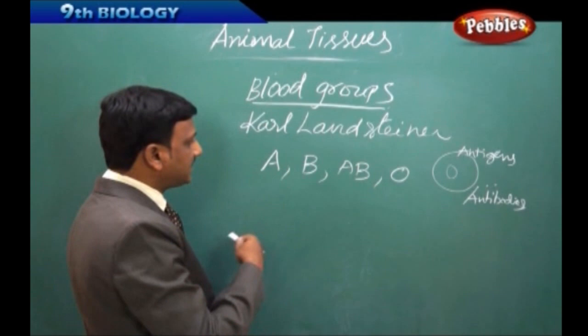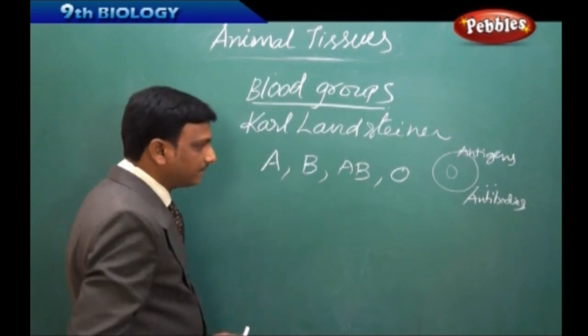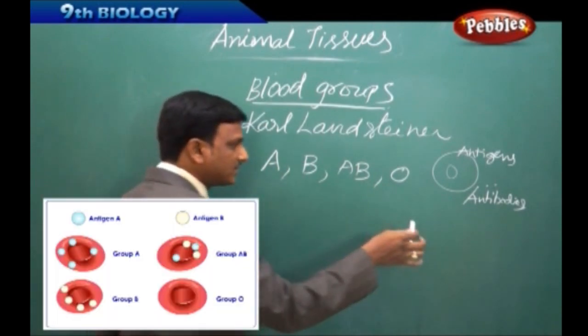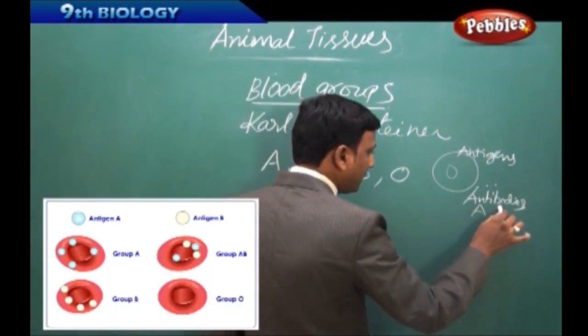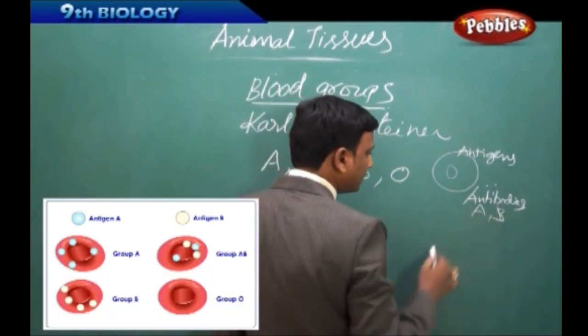Antigens are of different types: antigen A and antigen B. Antibodies are also of different types: antibody A and antibody B.